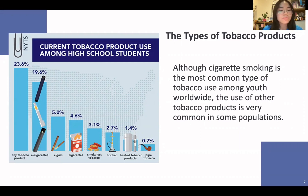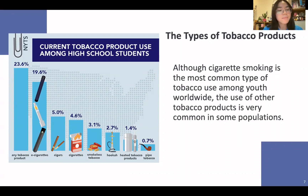Many young people use two or more tobacco products. In 2020, nearly three of every 100 middle school students and about eight of every 100 high school students reported current use of two or more tobacco products in the past 30 days. In 2019, about 12 of every 100 middle school students and about 30 of every 100 high school students said they had ever tried two or more tobacco products. Youth who use multiple tobacco products are at higher risk for developing nicotine dependence and are more likely to continue using tobacco into adulthood. Any kind of tobacco product is harmful to our health.